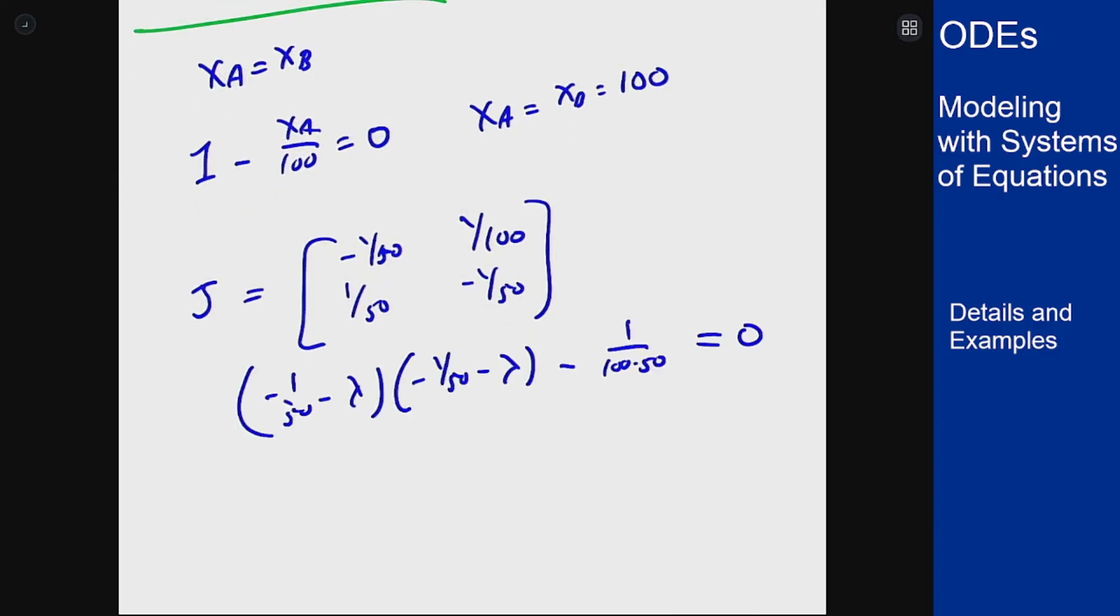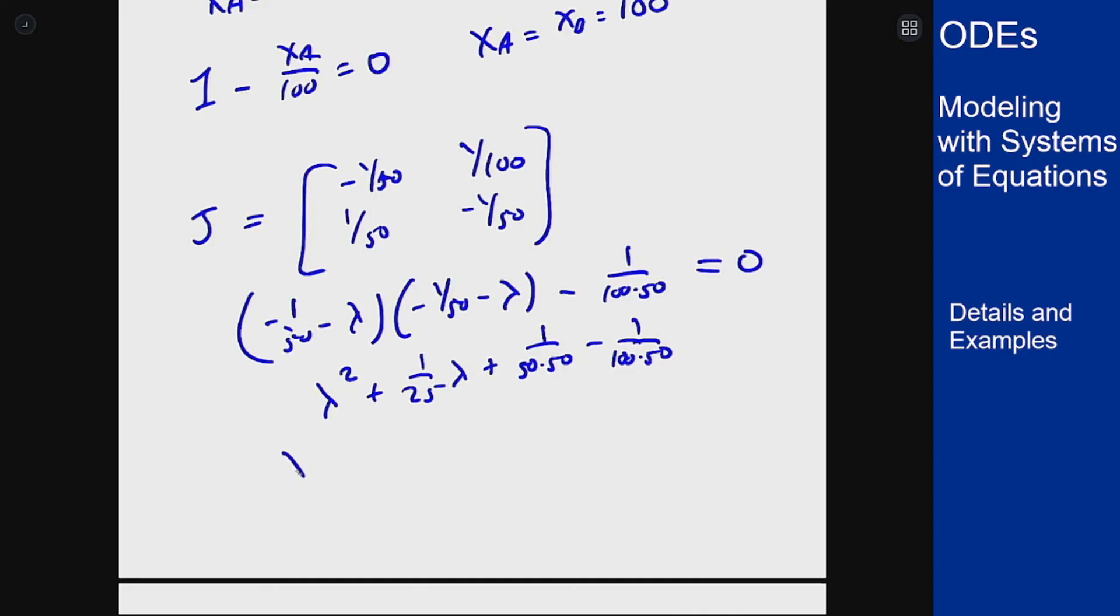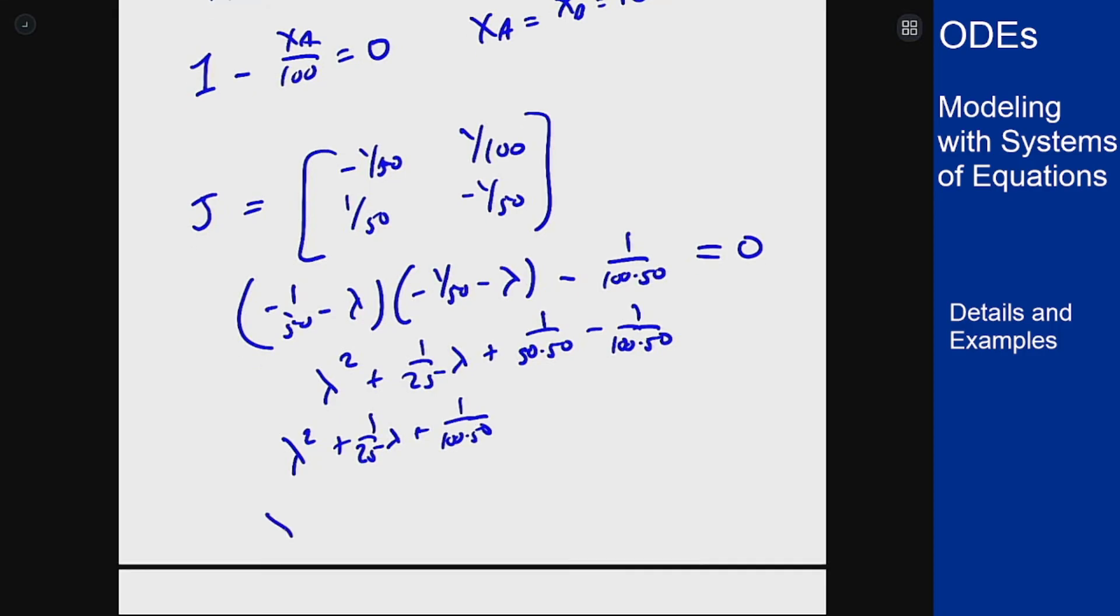If I do so I will get something that looks like lambda squared plus 1/25 lambda plus 1/(50 times 50) minus 1/(100 times 50), results in lambda squared plus 1/25 lambda plus 1/(100 times 50). And if I work out the quadratic formula here I would get that lambda should be negative 1/25 plus or minus the square root of 1/25 squared minus 1/(25 times 50) because the 4 will cancel this 100 to make it a 25, over 2. This part here is positive under the square root because the second term is less, which means these will be real distinct negative roots. So it's a nodal sink.